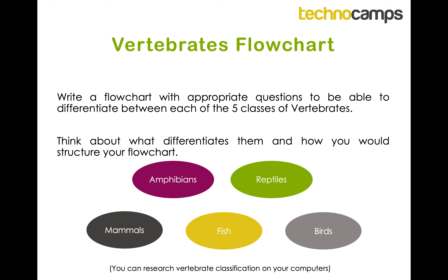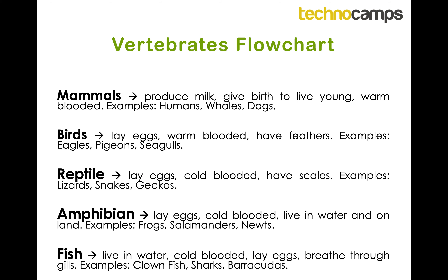For example, finding out whether a given animal belongs to what type of vertebrate. You have mammals, birds, reptiles, amphibians and fish — all categorised by different characteristics. Birds lay eggs, are warm-blooded and have feathers. If I give you a seagull, you'd ask: does it produce milk, does it give birth to live young, is it warm-blooded? If yes to all, it's a mammal. If it's warm-blooded but the answer to one question differs, it could be a mammal or a bird — so you ask does it have feathers, and if so it's a bird.